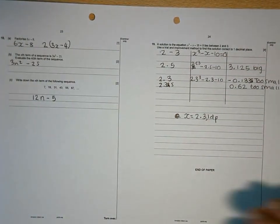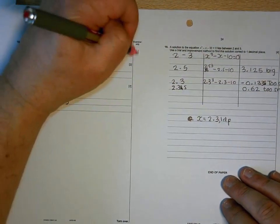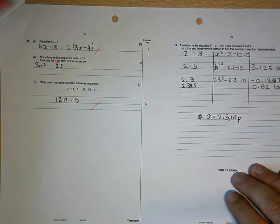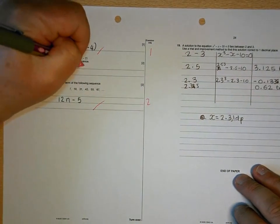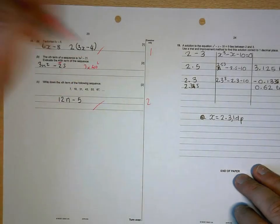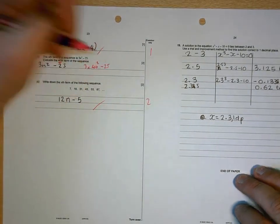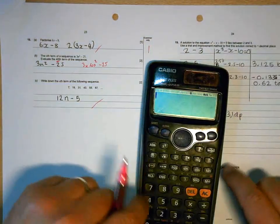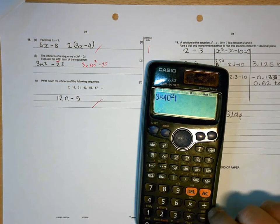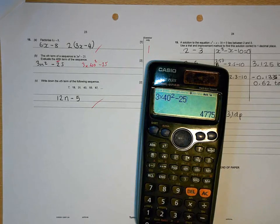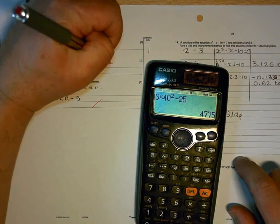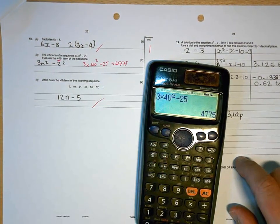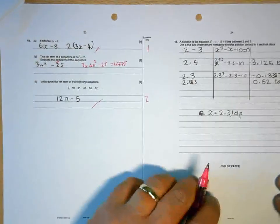And then here, that one's right. That one's right. And with this one, what you have to do is to evaluate the 40th term. That means n is 40. So you've got to do 3 lots of 40 squared, take away 25 with my calculator. On your calculator, 3 times 40 squared, take away 25 equals 4775. And again, if you look there, I will type that onto the calculator exactly as I've written it.